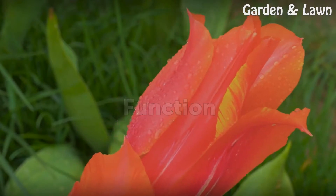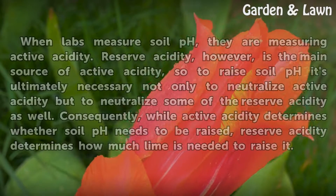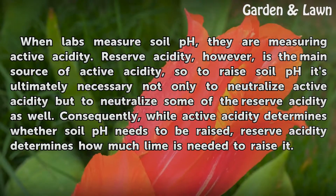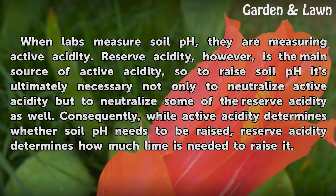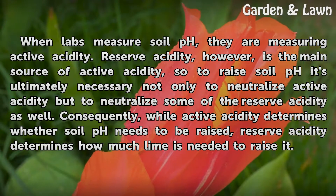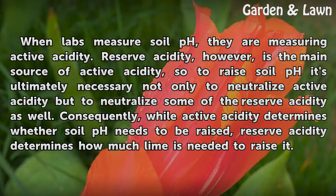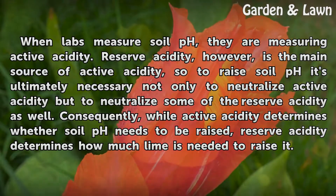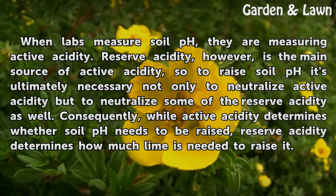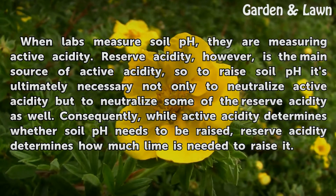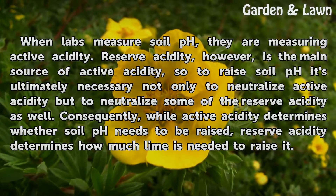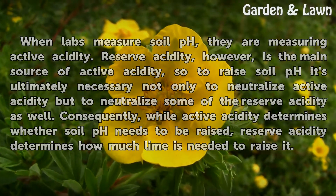Function. When labs measure soil pH, they are measuring active acidity. Reserve acidity, however, is the main source of active acidity, so to raise soil pH it's ultimately necessary not only to neutralize active acidity but to neutralize some of the reserve acidity as well. Consequently, while active acidity determines whether soil pH needs to be raised, reserve acidity determines how much lime is needed to raise it.